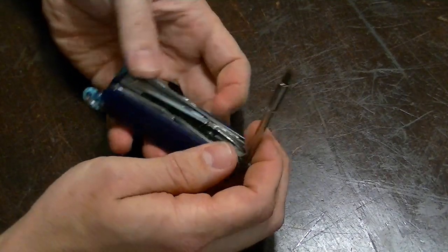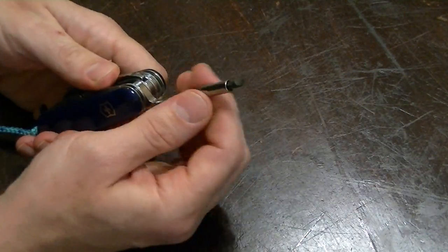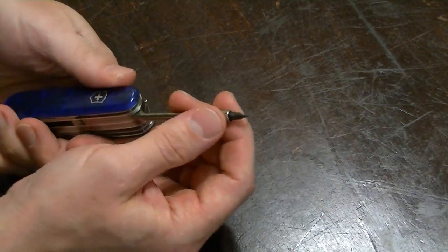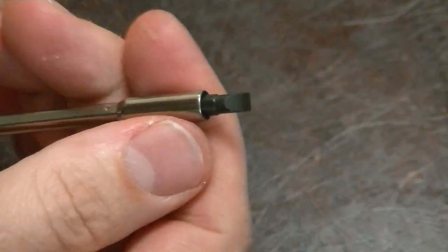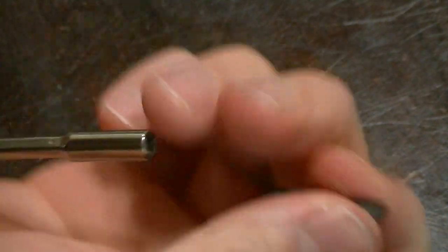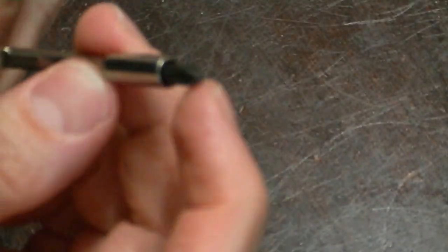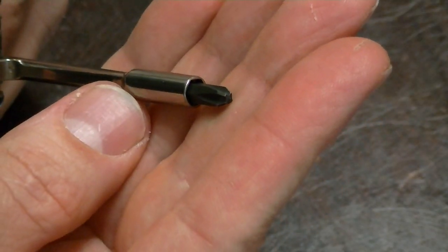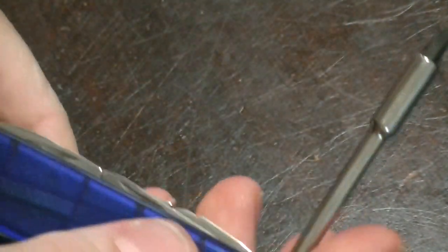It's nice and long, so it can get to recess screws. The standard bit that it comes with is a medium flat head on one side and a number two Phillips on the other side. And it's a hardened number two Phillips, so that really holds up well. And it also locks it at 90 degrees.